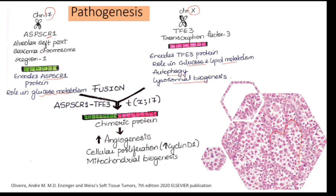When ASPCR and TFE3 fuse, they give rise to one chimeric gene that codes for a chimeric protein. This protein upregulates angiogenesis. That is why this tumor is rich in blood vessels — if you have more angiogenesis, you will see lots of blood vessels.